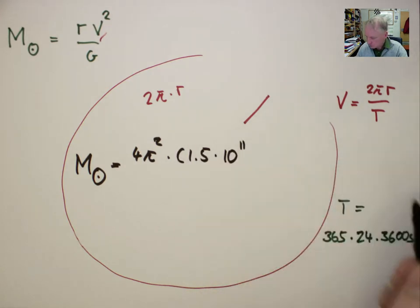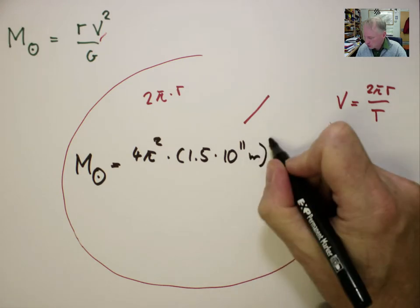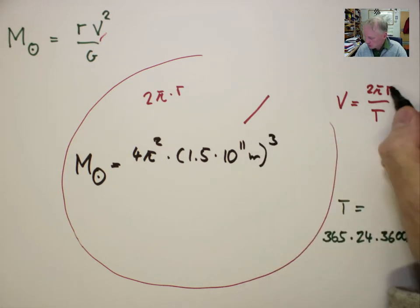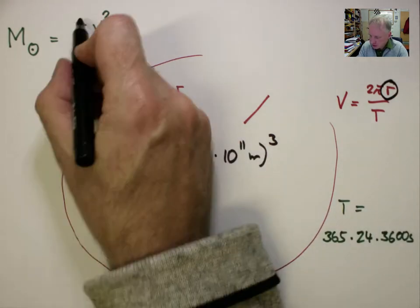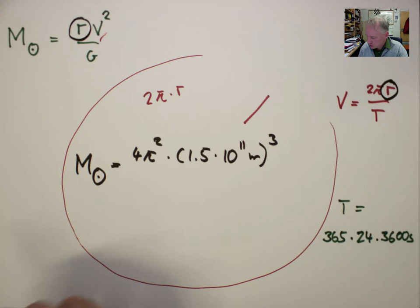There are two r's coming from here, via the V squared, and another r is already there, which gives us the cube.